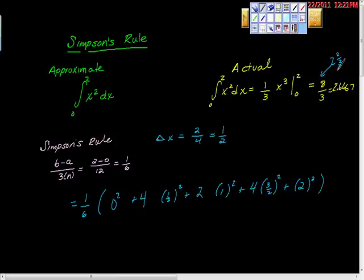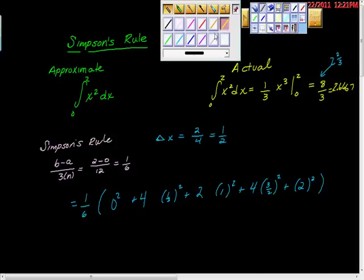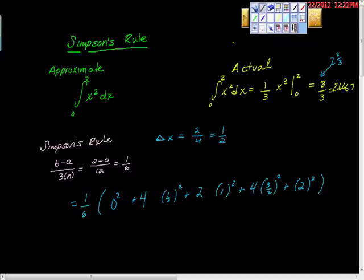When we used the trapezoidal rule, it came out to be 11/4 or 2.75. So what we want to do is compare that to Simpson's rule. I'm going to write down here that the trapezoidal rule gave us 2.75, because we'd like to compare the accuracy of the trapezoidal rule to the actual, to the accuracy of Simpson's rule.